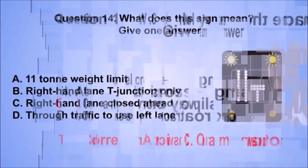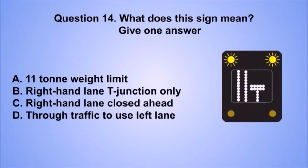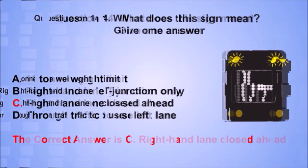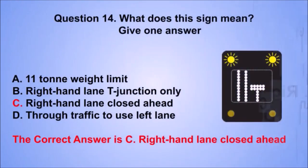Question 14. What does this sign mean? The correct answer is C: Right hand lane closed ahead.